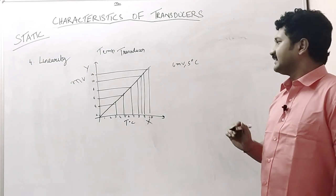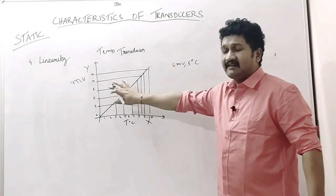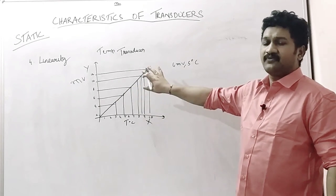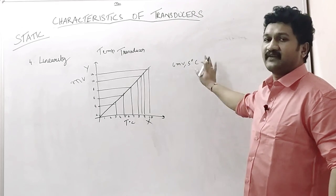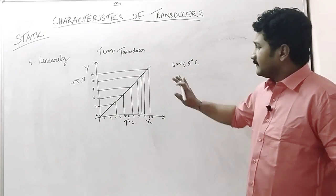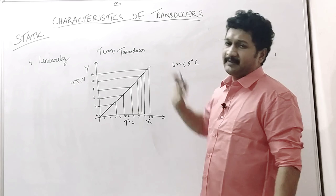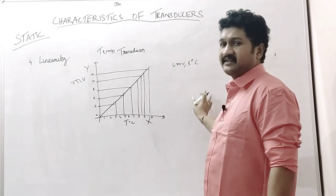What is linearity here? Let us have this as a standard measurement of a temperature transducer. It should give 6 millivolt as an output for 5 degree Celsius. Now take another temperature transducer measured by the same company.